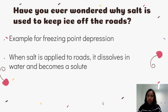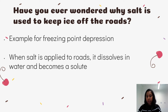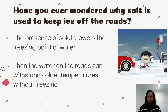During cold weather, salt and grit are usually applied to roads. The salt makes ice melt even if the air temperature is below freezing point. When salt is applied to roads, it dissolves in water and becomes a solute. The presence of the solute lowers the freezing point of water — meaning water will not turn to ice. Therefore, water on the roads can withstand cold temperatures without freezing for a long time.